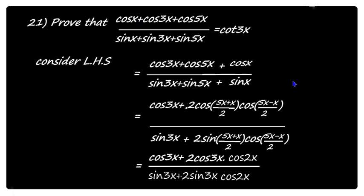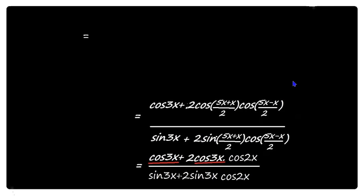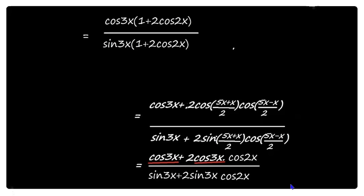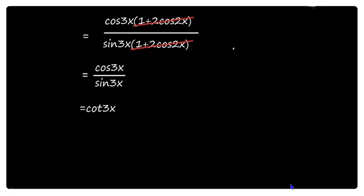Now take common terms. In the numerator, cos 3x is common in both terms, leaving cos 3x times (1 plus 2 cos 2x). In the denominator, sin 3x is common, leaving sin 3x times (1 plus 2 cos 2x). The factor (1 plus 2 cos 2x) cancels, leaving cos 3x divided by sin 3x, which equals cot 3x, the right hand side.